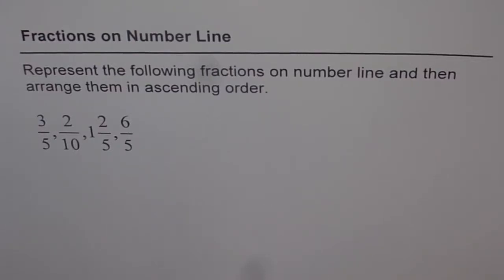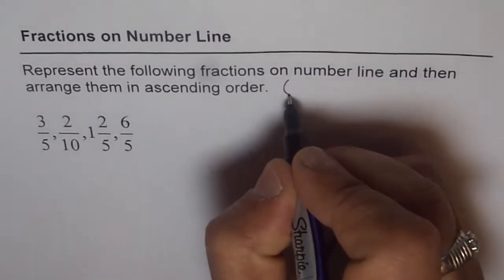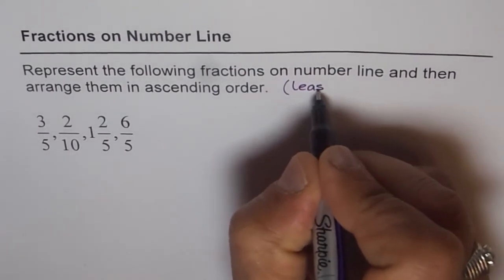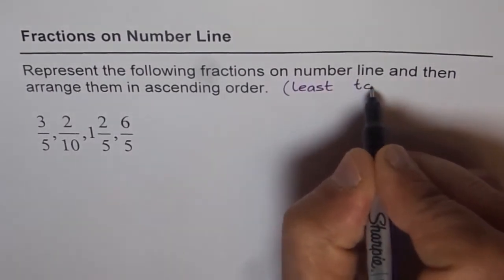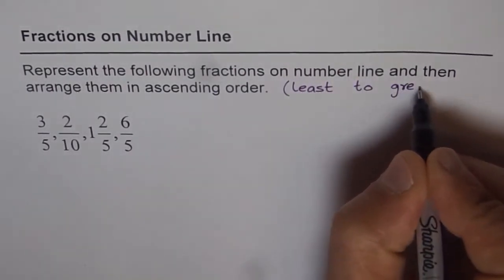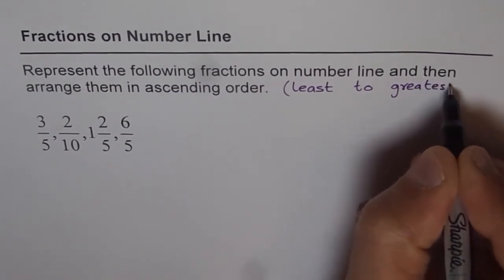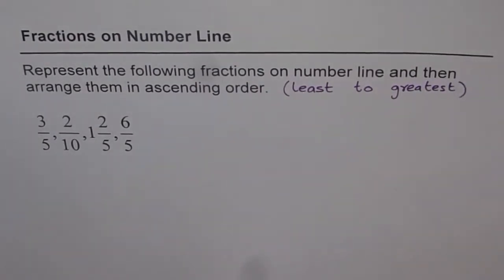Let us now explore fractions on number line. Question is, represent the following fractions on a number line and then arrange them in ascending order. Ascending order means increasing order, from least to greatest.